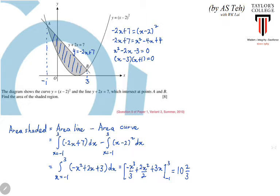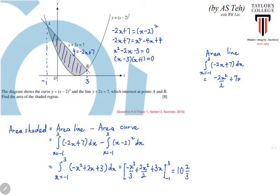As an extension and to double-check the methodology, we can also calculate each area separately. The area under the line is the integral from x = -1 to 3 of (-2x + 7) dx, which gives [-x² + 7x] evaluated from -1 to 3. This should give a value of 20.